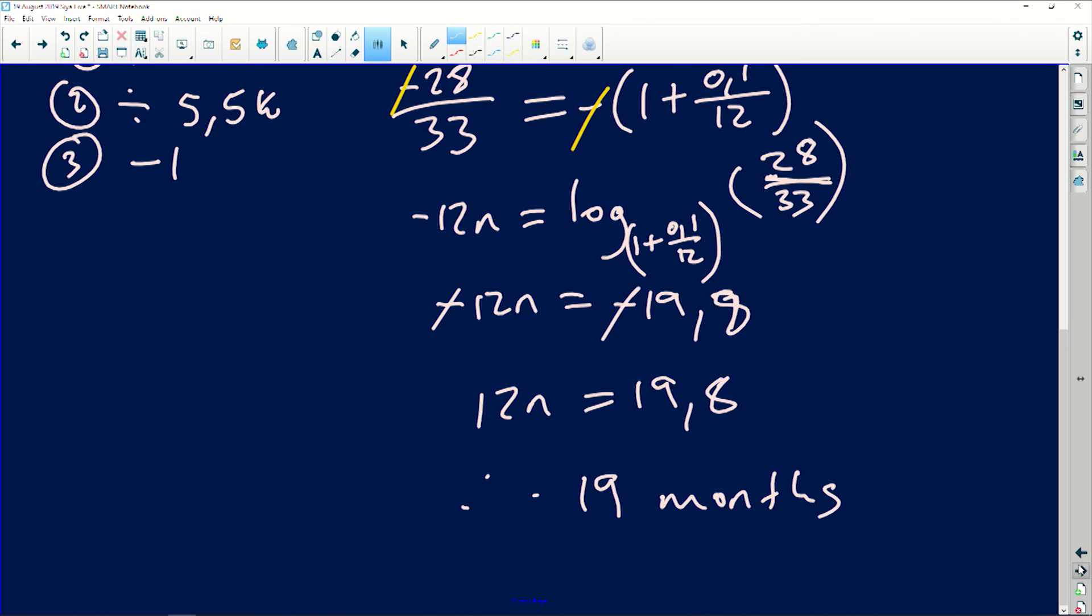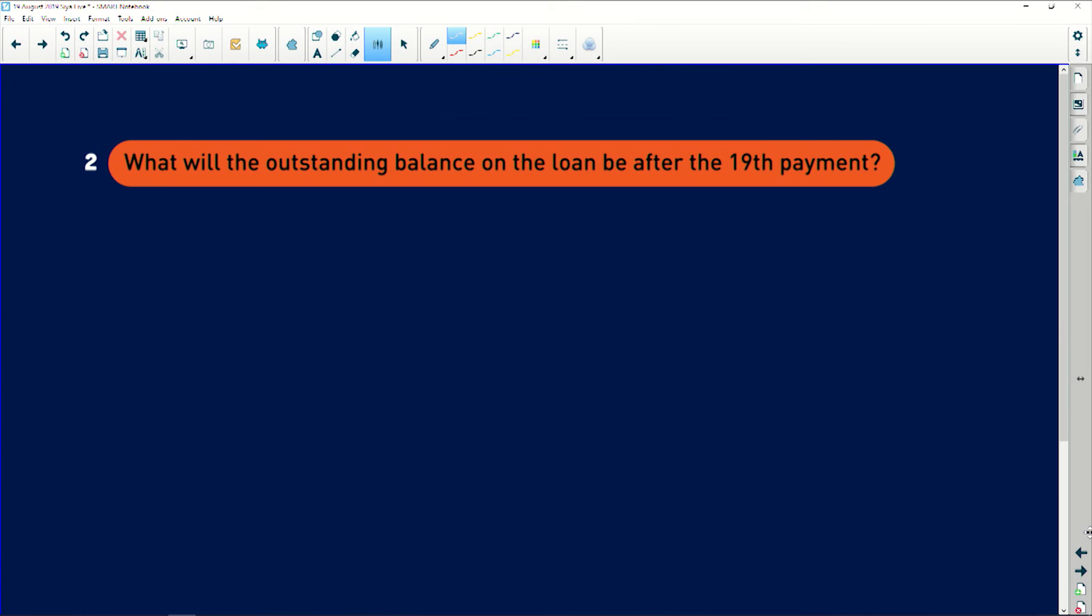So let's go to the second question. The second question says calculate what will the outstanding balance be after the 19th payment. So the outstanding balance is given by the formula PV times (1 + i) to the exponent of n minus X times [(1 + i) to the exponent of n minus 1] all divided by i. I hope people are aware of this formula.